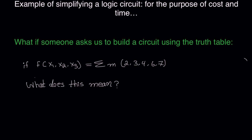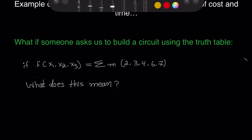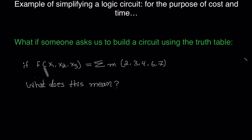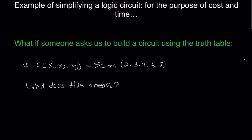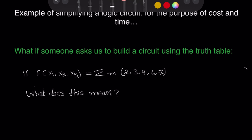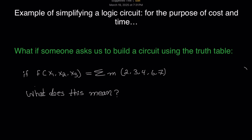So let's jump start here. What if someone asked you to build a circuit using a truth table? For example, if a function of inputs x1, x2, and x3 is given as the summation of min terms number two, three, four, six, and seven — that means the output will be logically true for min terms m2, m3, m4, m6, and m7.